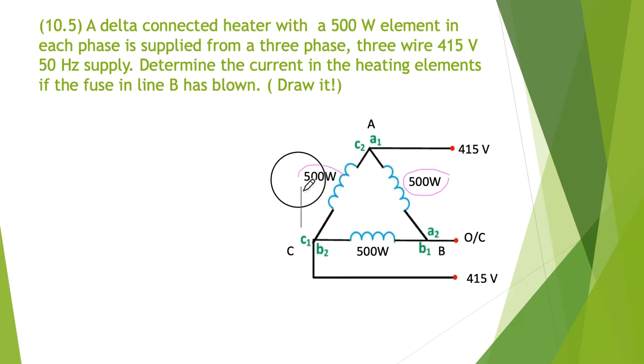And we've got 500 watts in each of the elements. It's an open circuit, so no current, no connection here. So what do we do next? So there is no phase relationship here. Root three is a waste of time. We have to use straight Ohm's law.